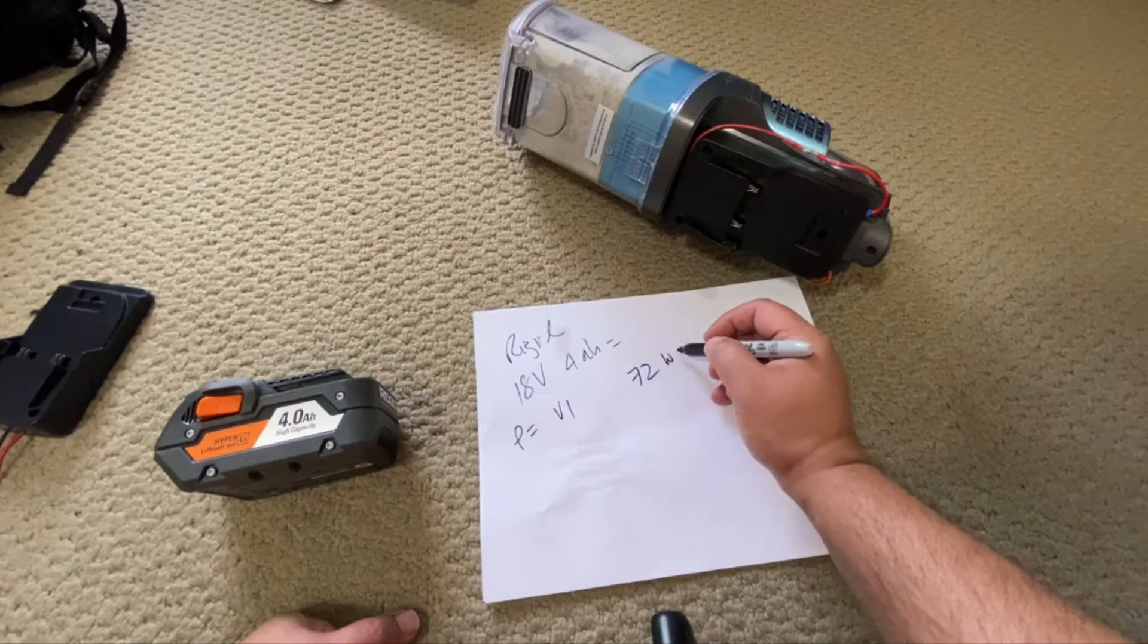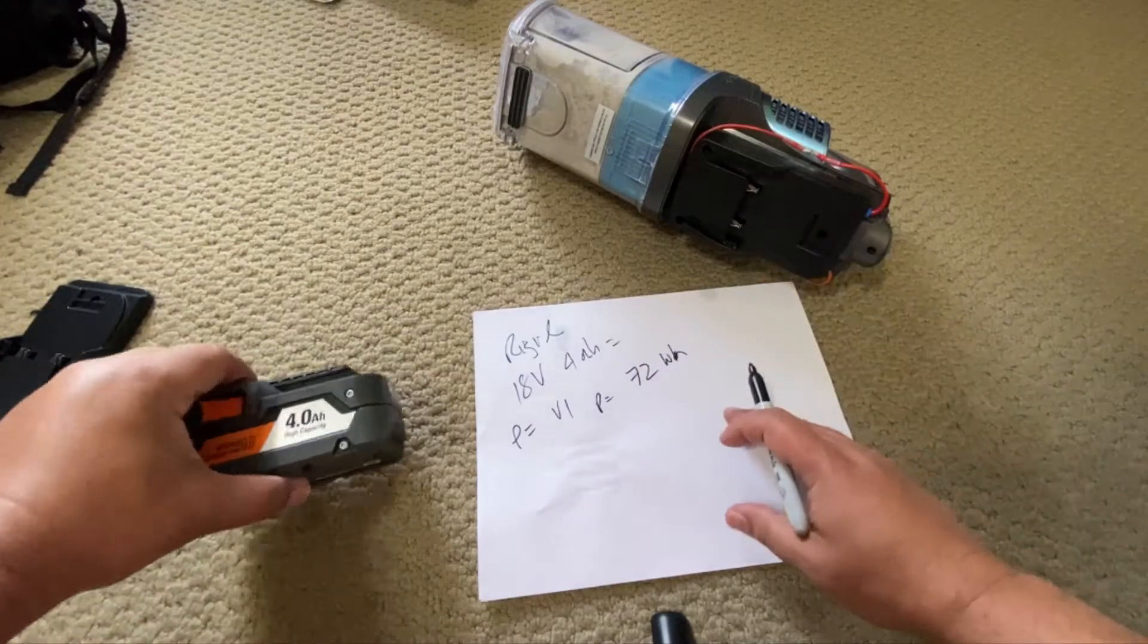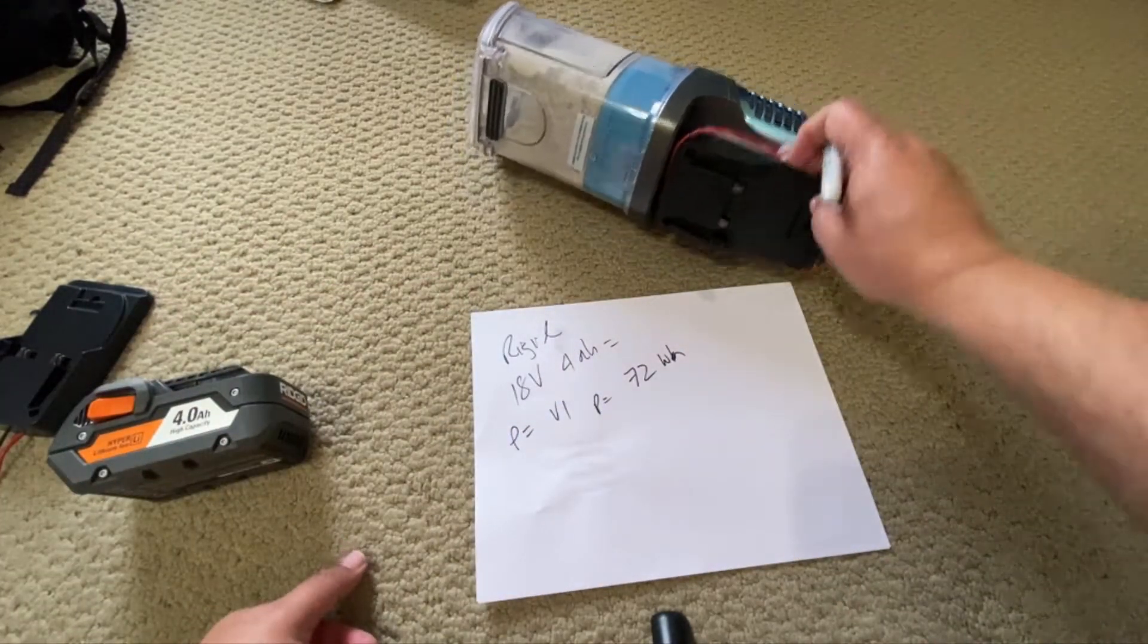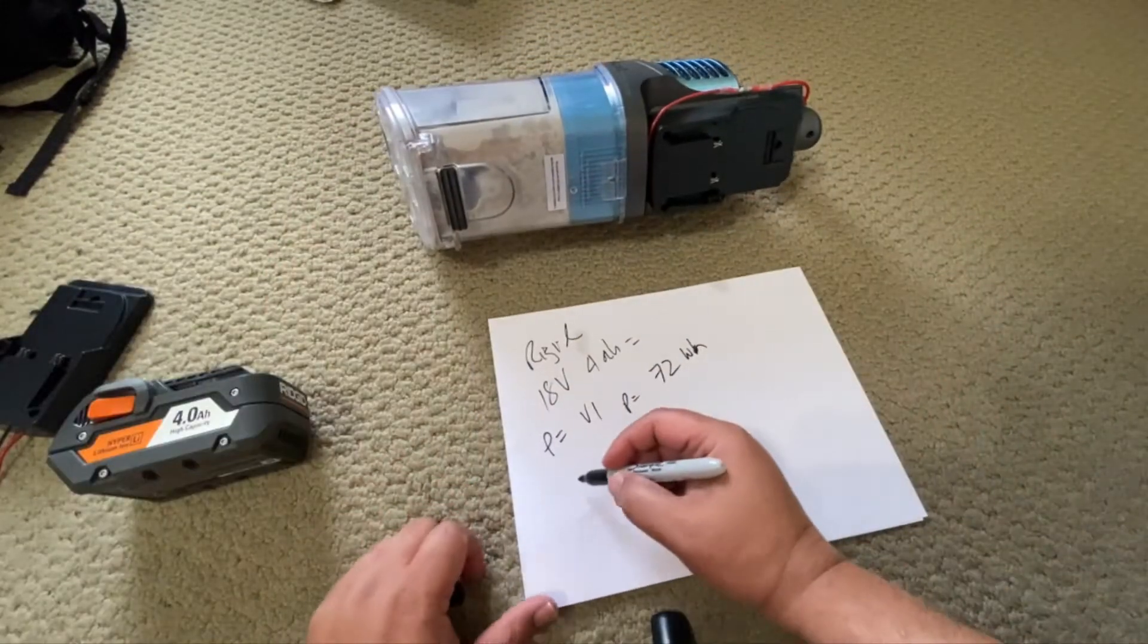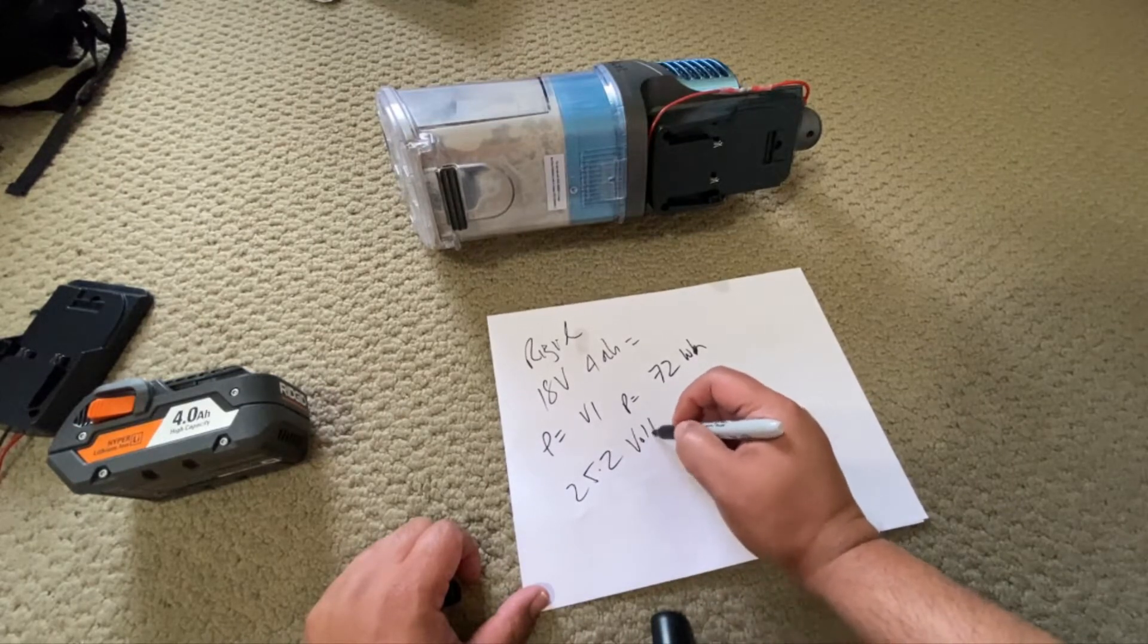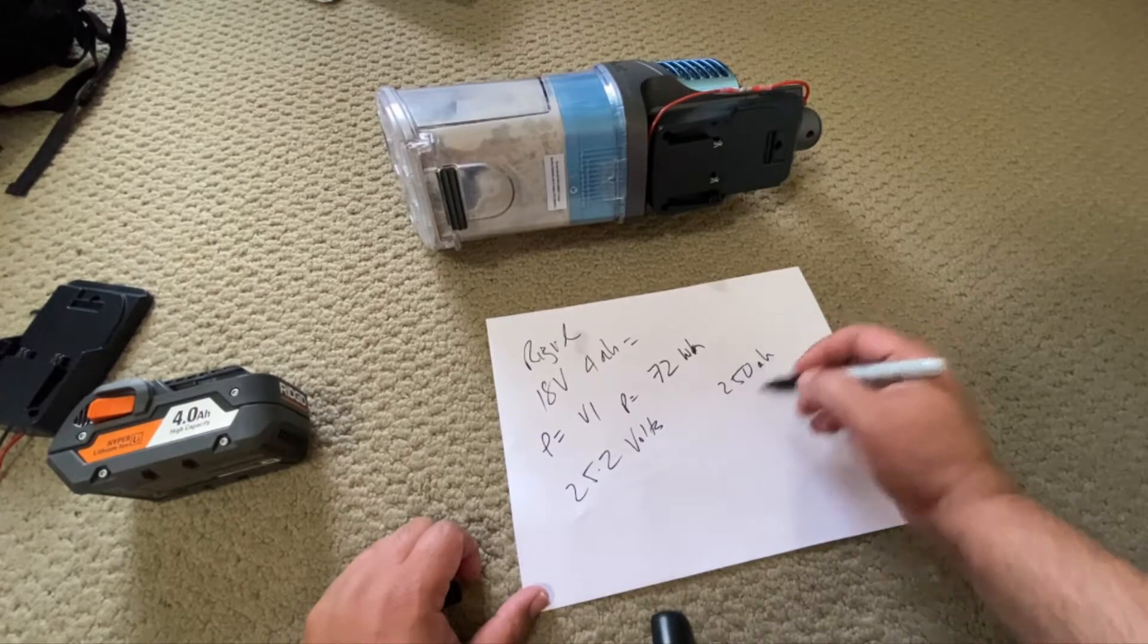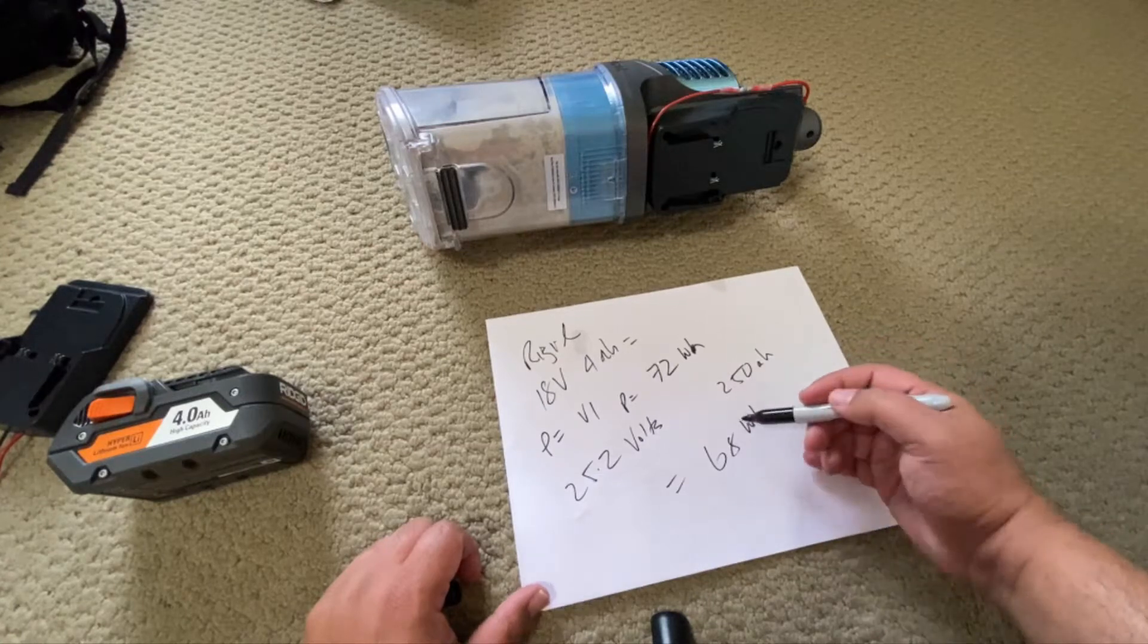Now this one, it's behind here and I screwed this on already so I can't show it to you, but it's something like 25.2 volts and something like 2.50 amp hours. Anyway it comes out to 68 watt hours basically.